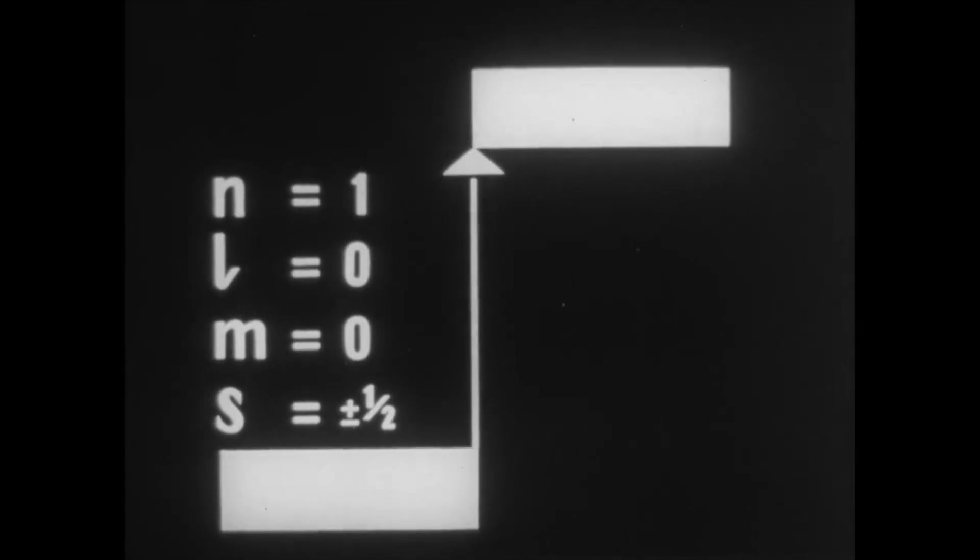The electron cloud here is spherically symmetrical. When it receives energy in the form of a quantum, the orbital changes. The quantum numbers take values corresponding to the new energy state.